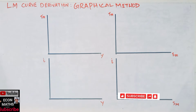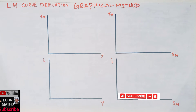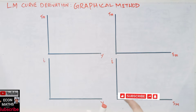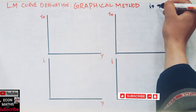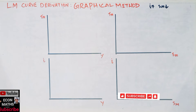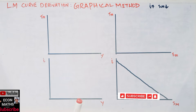In the first graph we have the speculative demand function for money. There is a negative relationship between rate of interest and speculative demand for money, so this curve will be downward sloping. If the rate of interest increases, speculative demand for money will decrease.